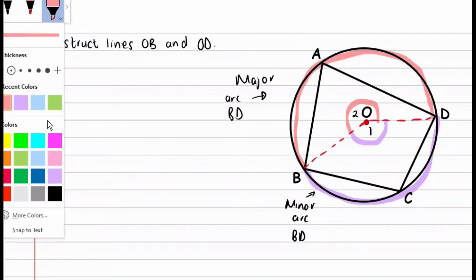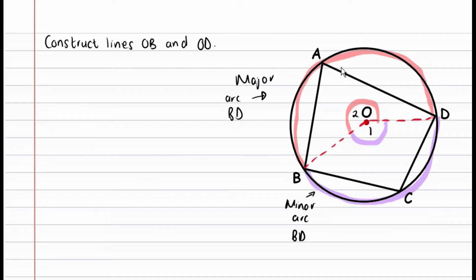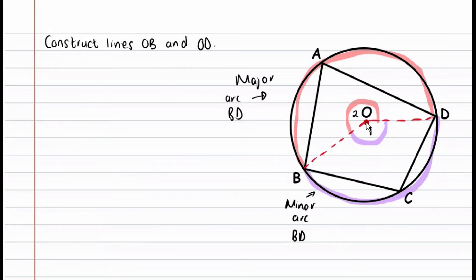Now let's look at the angles at the circumference and see which arcs support them. To find the arc supporting an angle, find what lines create that angle — the endpoints of those lines form the arc. So for angle O1, we go to points B and D and see that arc BD supports it. Notice that the angle and its supporting arc are always opposite each other. So the minor arc BD supports O1, and the major arc BD is opposite and supports O2.